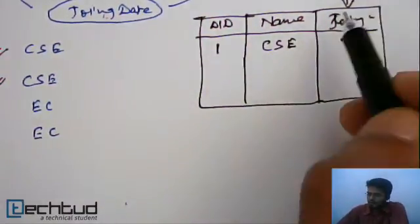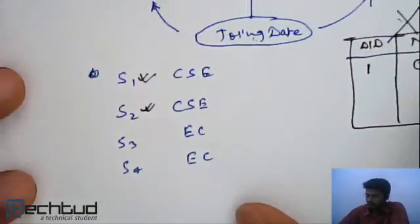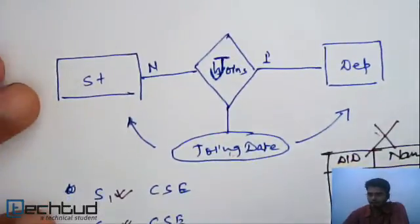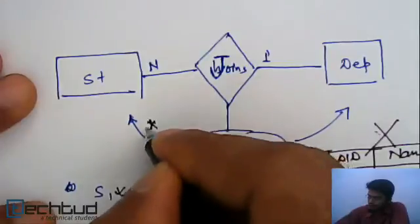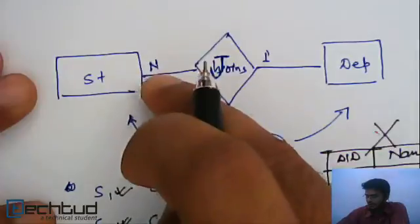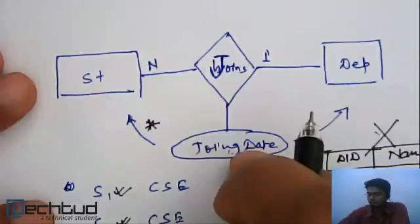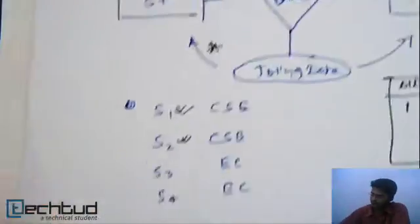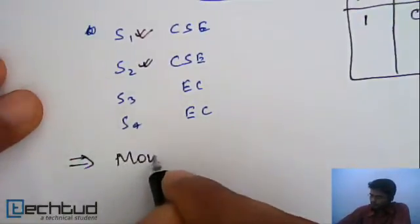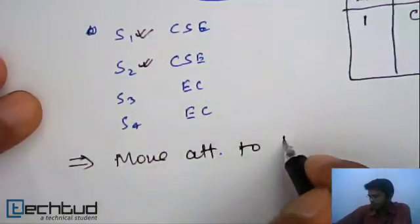So in this case, moving to the department side is a wrong assumption. We have to move the attribute to the N side. N side means the many side. In a many-to-one relationship, if a relationship has an attribute, you have to move this attribute to the N side — the many side.